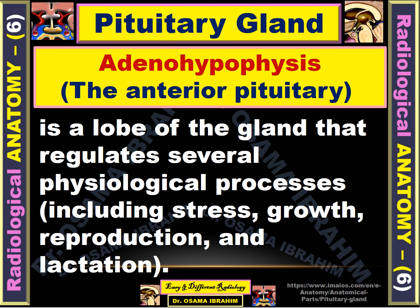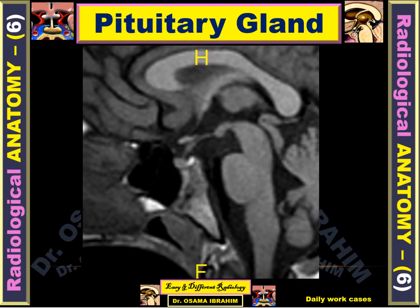The adenohypophysis is another name for the anterior pituitary gland. It is the lobe of the gland that regulates several physiological processes including stress, growth, reproduction, and lactation, as it is responsible for the production of several hormones. The pituitary gland sits within the sella turcica — the anterior pituitary gland is in the front portion, the posterior pituitary is behind, with the infundibulum above, and anteriorly the optic chiasm, hypothalamus, tuber cinereum, mammillary body, brainstem, midbrain, pons, medulla oblongata, fourth ventricle, and cerebellum.